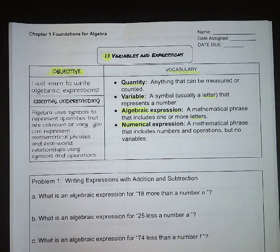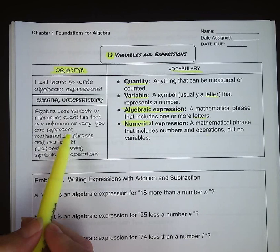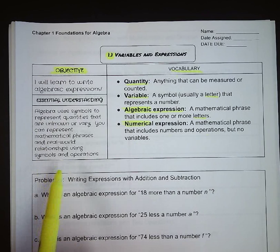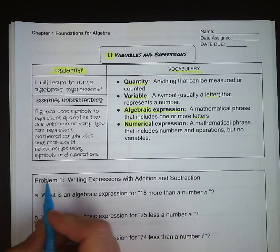Algebra uses symbols to represent quantities that are unknown or vary. Algorithical phrases and real-world relationships using symbols and operations. Alright, so problem 1, writing expressions with addition and subtraction.